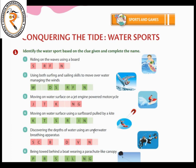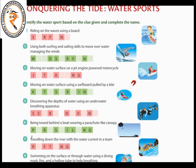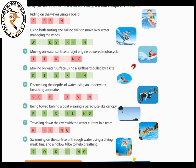Discovering the depths of water using an underwater breathing apparatus is called scuba diving — S-C-U-B-A diving. Traveling being towed behind a boat wearing a parachute-like canopy is parasailing. Swimming down the river with the water current in a team is called rafting — river rafting. Swimming on the surface or through water using a diving mask, fins, and a hollow tube to help breathing is called snorkeling: S-N-O-R-K-E-L-I-N-G.